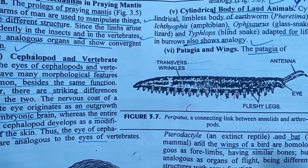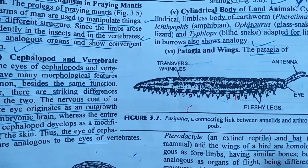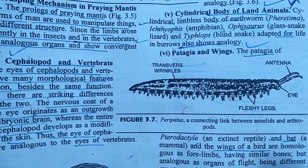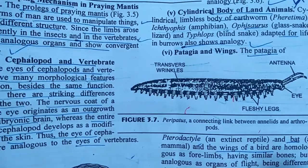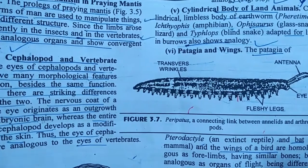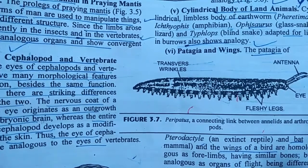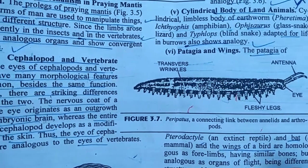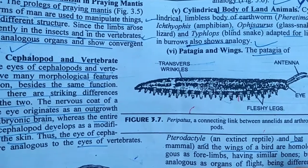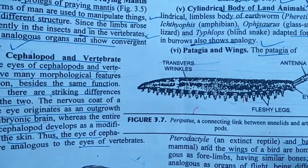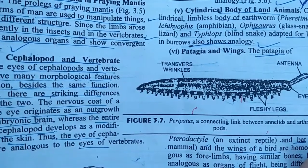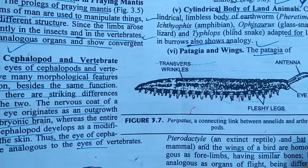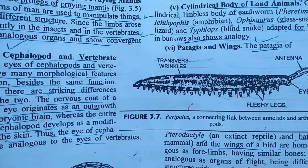Next we have the cylindrical body of land animals such as the caecilian, earthworm, and blind snake. They crawl on the ground, have vestigial limbs, and they also represent analogies.